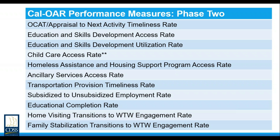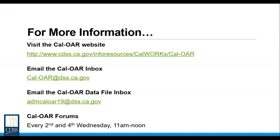Additional phase two measures include: transportation provision timeliness rate, subsidized to unsubsidized employment rate, educational completion rate, home visiting transitions to welfare-to-work engagement rate, and family stabilization transition to welfare-to-work engagement rate. For additional information, please access the resources listed on your screen. I would suggest going early and often to the Cal-OR website for everything Cal-OR related. Any questions can also be sent to the Cal-OR inbox. For data file questions, please send those to the data file inbox.